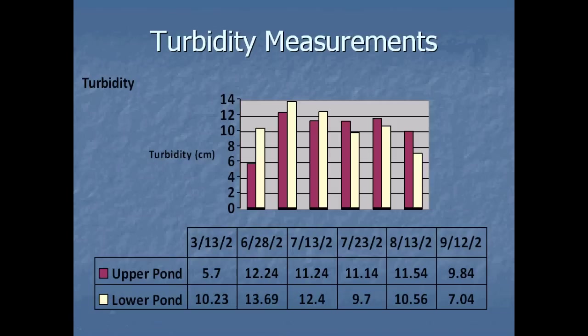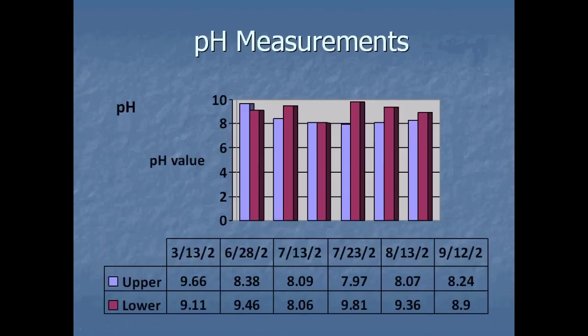For turbidity of the upper pond, shown as the purple bars, the turbidity values increased over time, meaning the water became more clear. For pH of the upper pond, shown as the blue bars, the pH values decreased over time, becoming more acidic and closer to a pH value of 7.